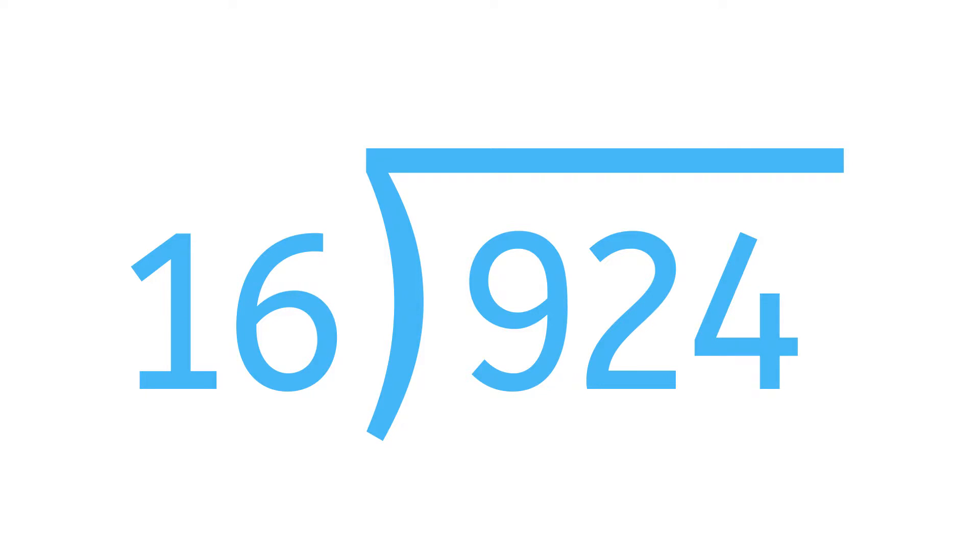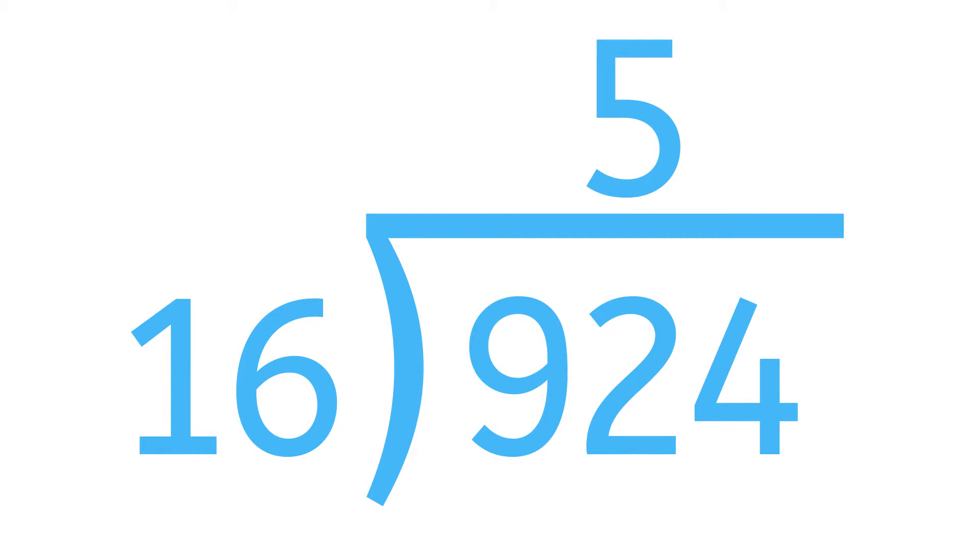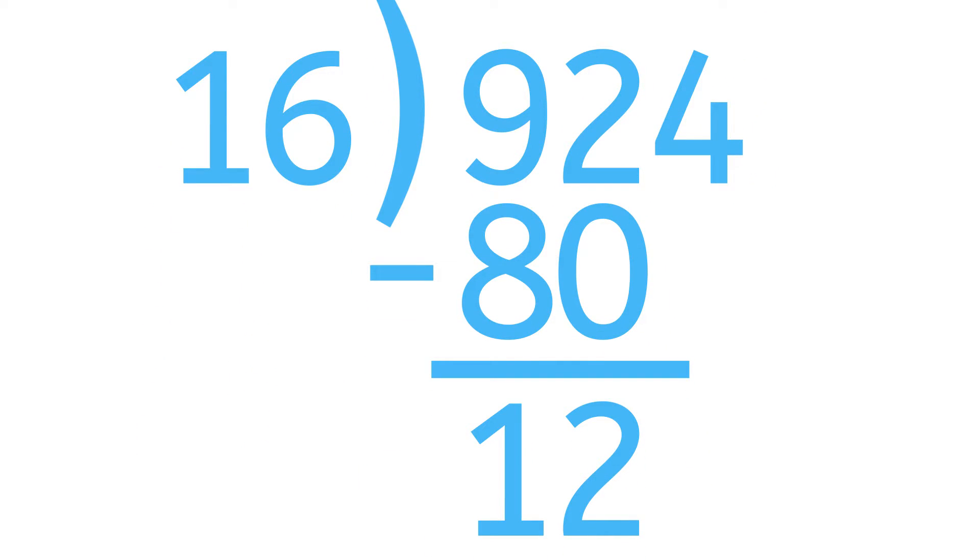Let's try just one more problem. Let's divide 924 by 16. 16 can't go into 9 at all. However, it can go into 92. Do you remember your multiplication tables? 5 times 16 is 80, and 6 times 16 is 96. So 5 is as close as we can get. Now if we subtract 80 from 92, we get 12.